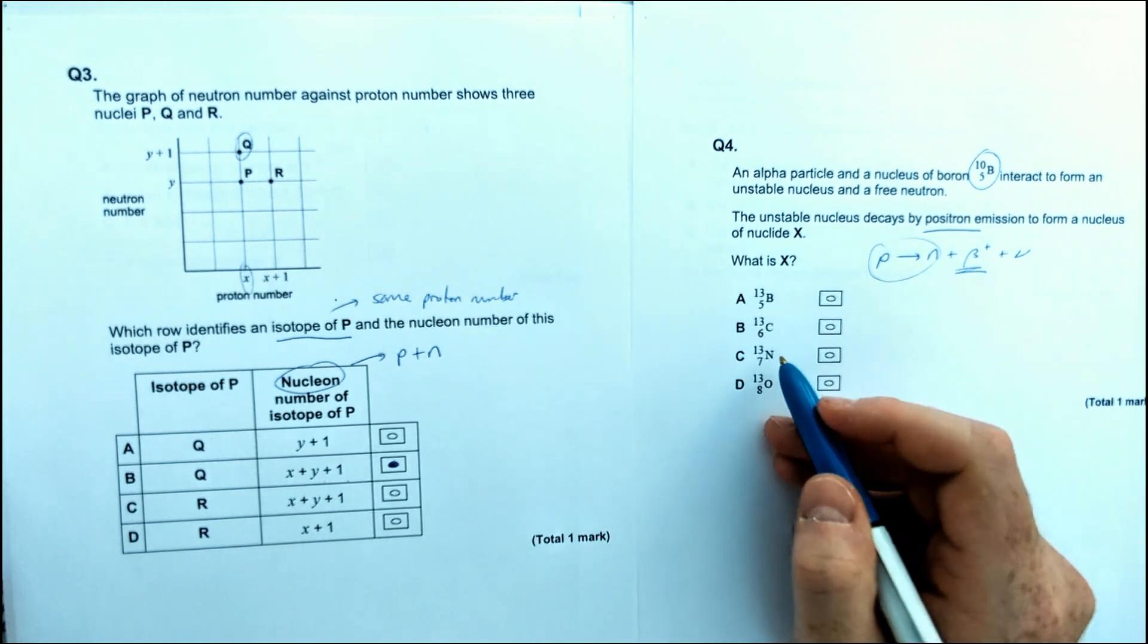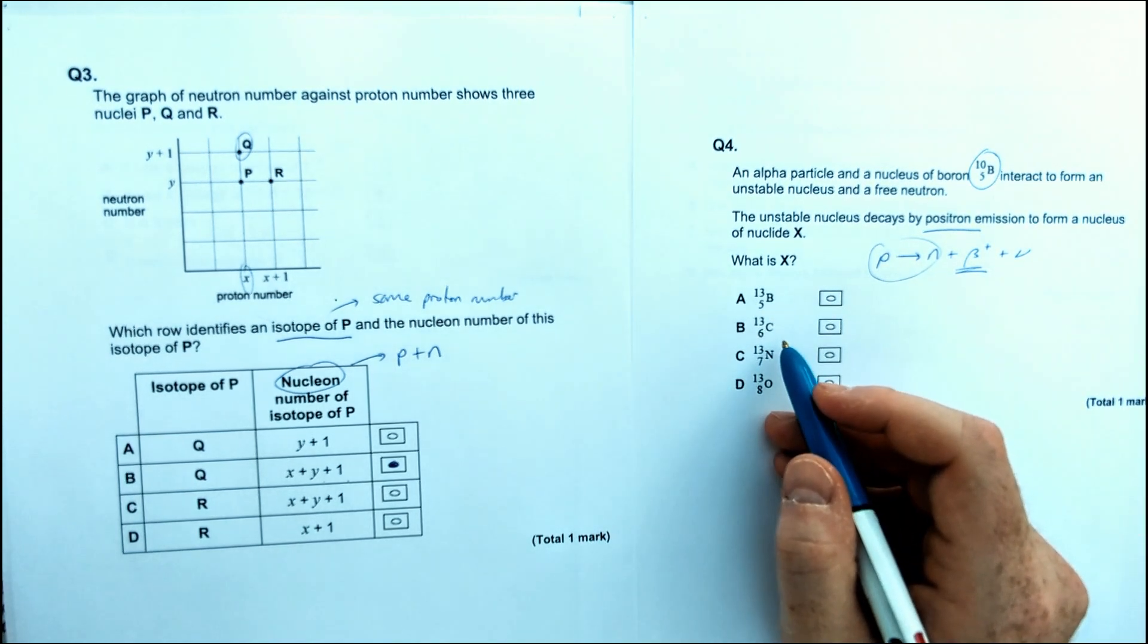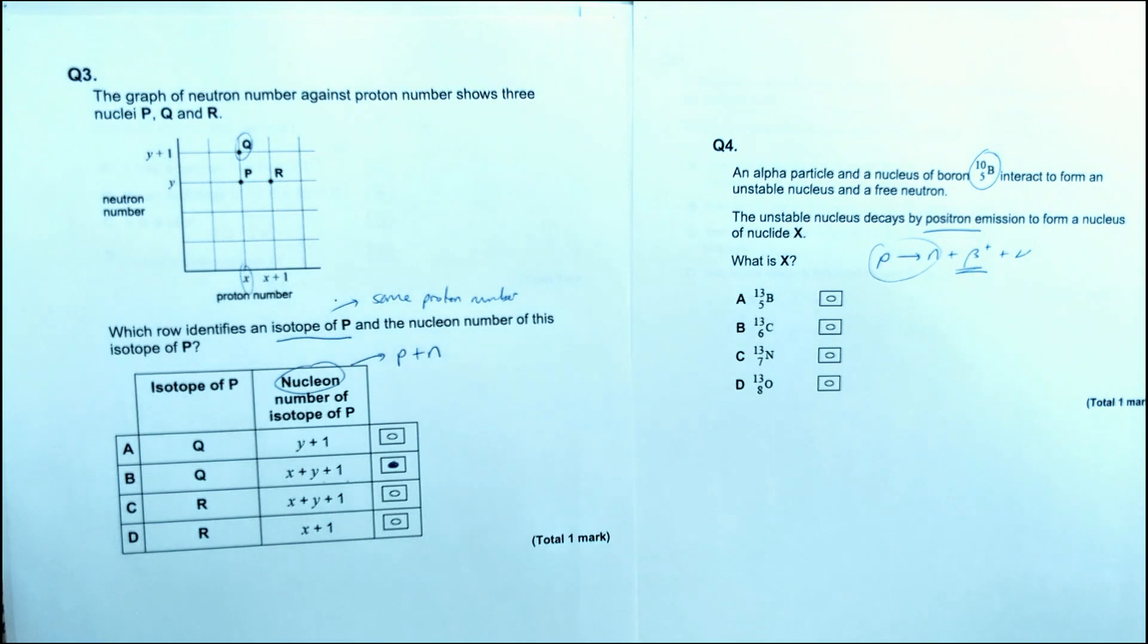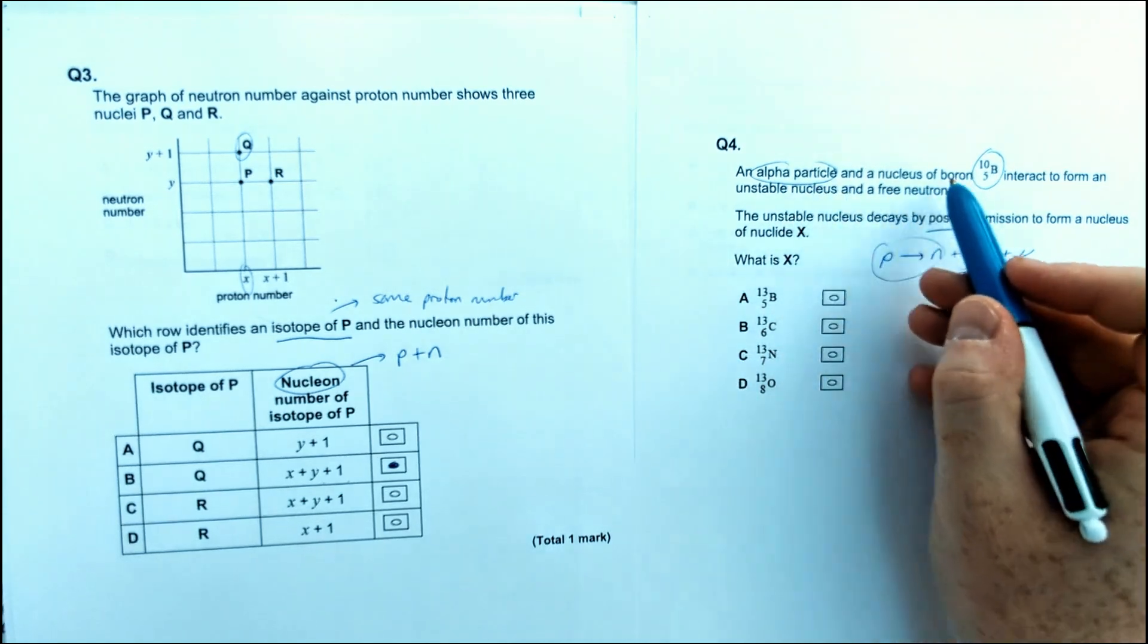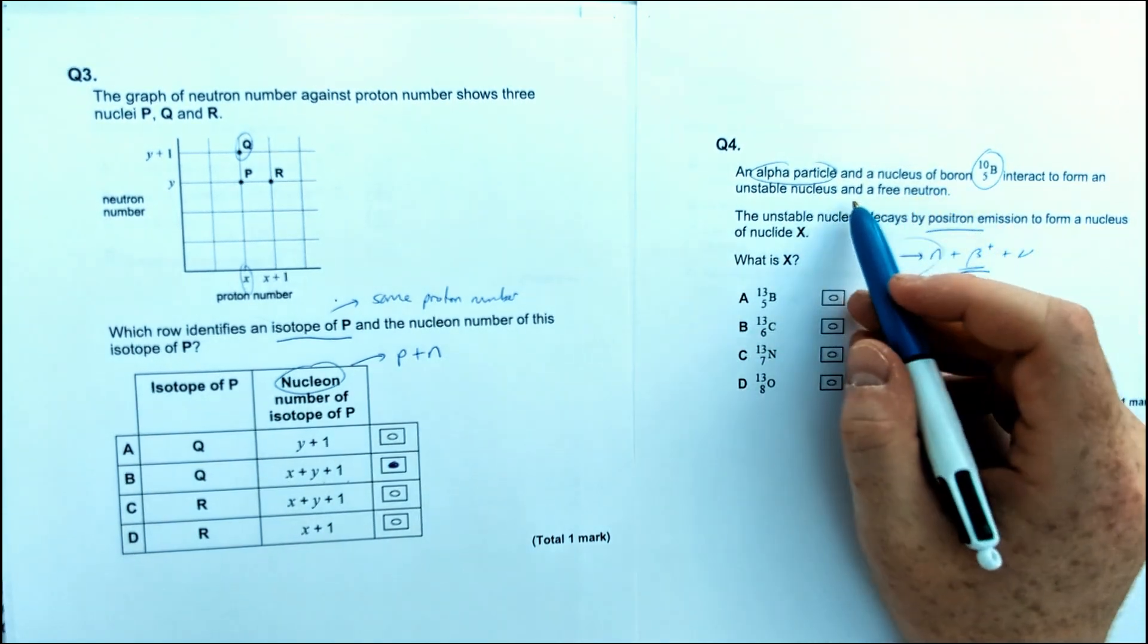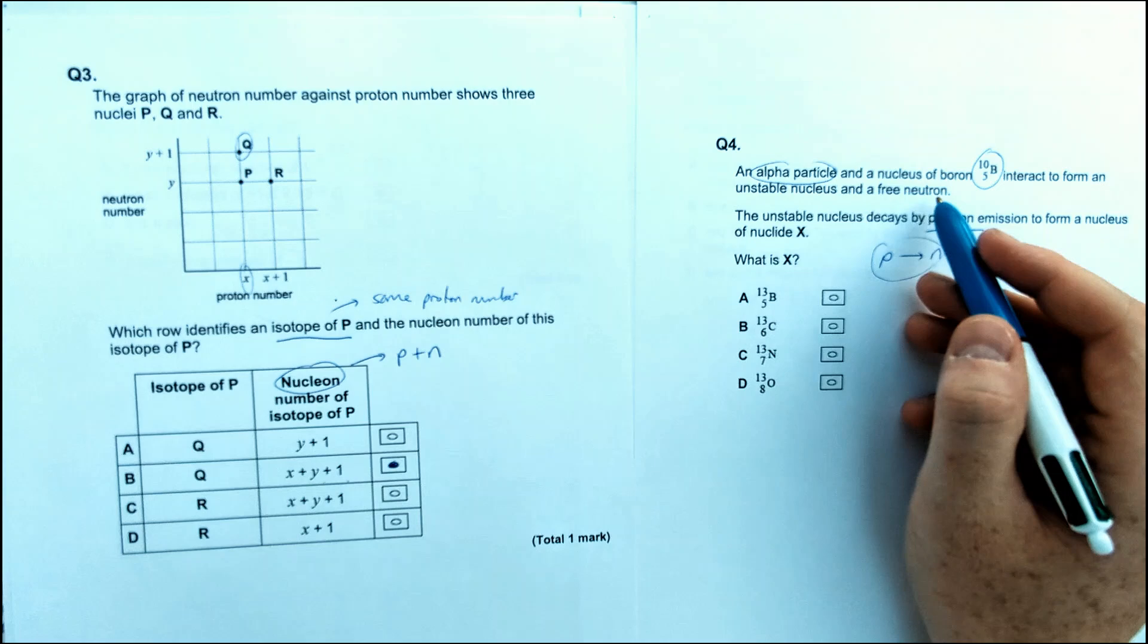So when the positron is emitted, we basically have a proton decaying into a neutron. So we need to have one of these atoms here is going to have to reflect that change. In addition to this, and I missed this the first time I read the question, it says the very first thing, an alpha particle and a nucleus of boron interact to form an unstable nucleus and a free neutron.